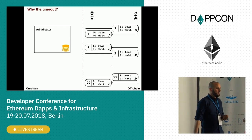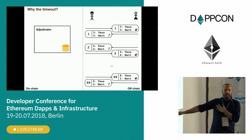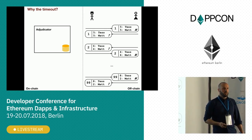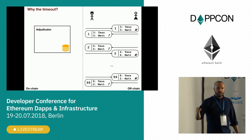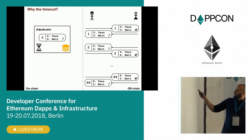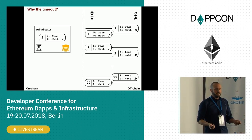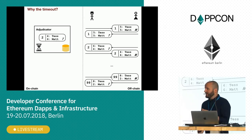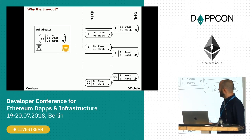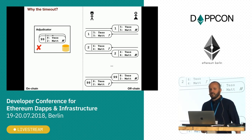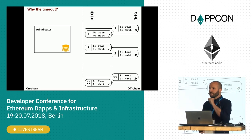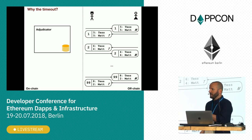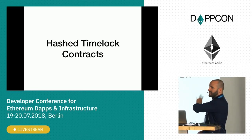That timeout is crucial to making this system secure. In the final state Tess had eight and Matt had two, whereas in the second state Matt had four - so it would be advantageous for Matt to try to cheat and present state number two instead of state number 99. The blockchain doesn't know that's not the last state, so it starts the timer. Tess has that time to respond - she can send the latest state and the contract can tell it wasn't the latest state by comparing version numbers, cancelling the challenge. The timeout is key in all these systems, and is also shared by Plasma and other off-chain solutions.